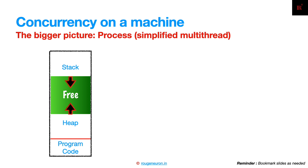The heap and stack are things that can evolve. The program code gets loaded, the stack grows accordingly, and the heap grows based on dynamic allocations. These two tend to move towards each other. In certain operating systems, the stack starts at a higher memory location.